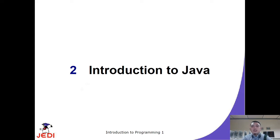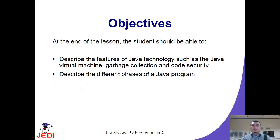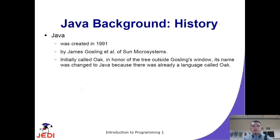It is important now to understand Java and how it works. These are the objectives of this lesson. Basically, a brief background of Java: it was first created in 1991 by James Gosling and his team in the Sun Microsystems Laboratories.